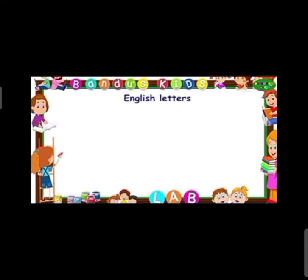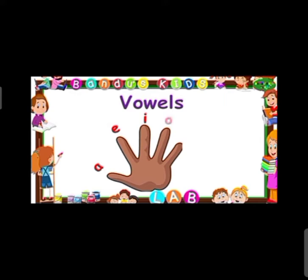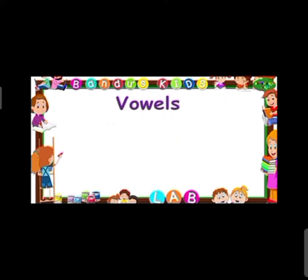There are 26 letters in the English alphabet. Yes, and there are five vowels. There are five vowels: A, E, I, O, and U. Let's read again — A, E, I, O, and U.